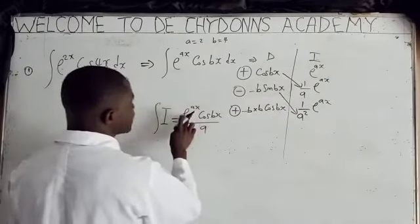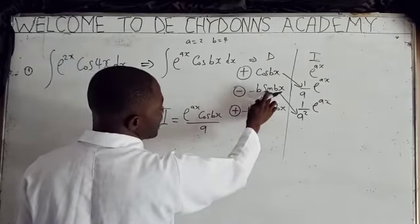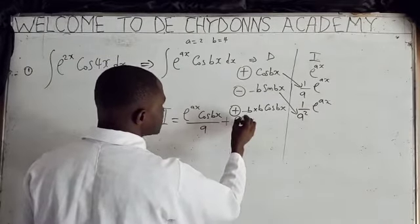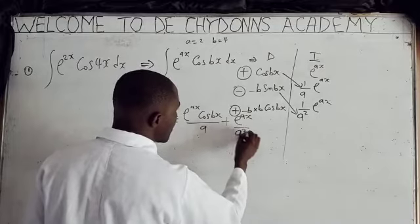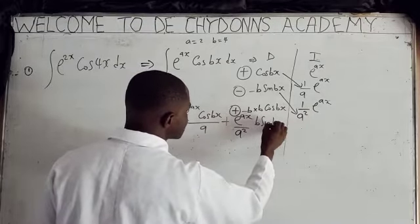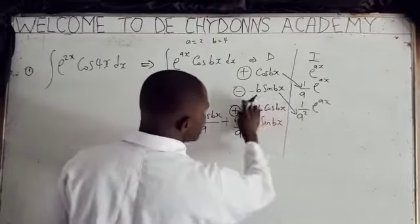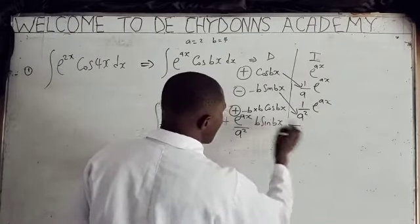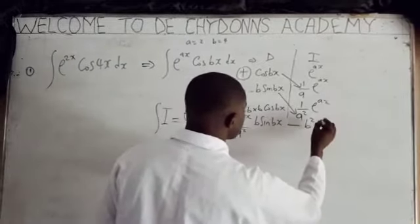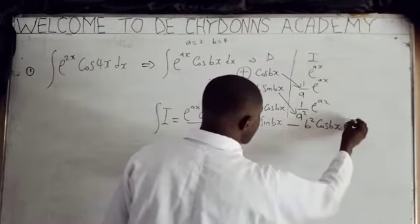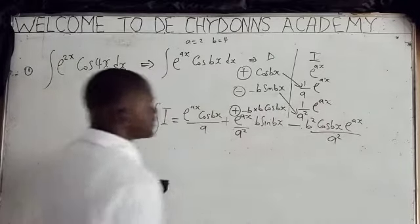So the right-hand side gives us: e^(ax)·cos(bx) all over A, plus b·sin(bx) times (1/a²)e^(ax). Then multiplying the signs: plus times minus gives minus, and minus times minus gives plus, so the last term becomes minus b²·cos(bx)·e^(ax) all over a².